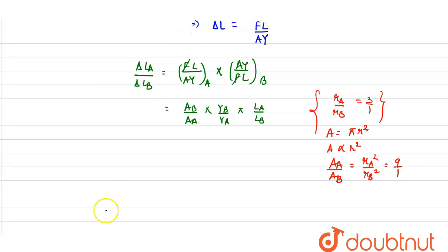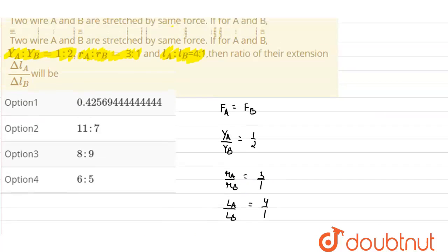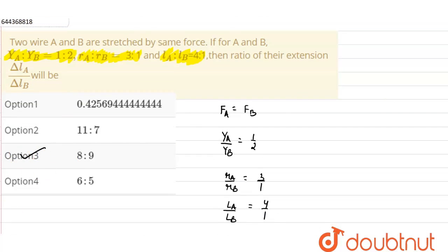So substituting the respective values we will get the ratio of the elongation of material A to material B or wire A to wire B. Area of A to B is 1 upon 9, into Young's modulus B upon A is given to us as 2 upon 1, into ratio of the length is given to us as 4 upon 1, so it will be equals to 8 upon 9. So choosing from the options we see option number 3 is correct.